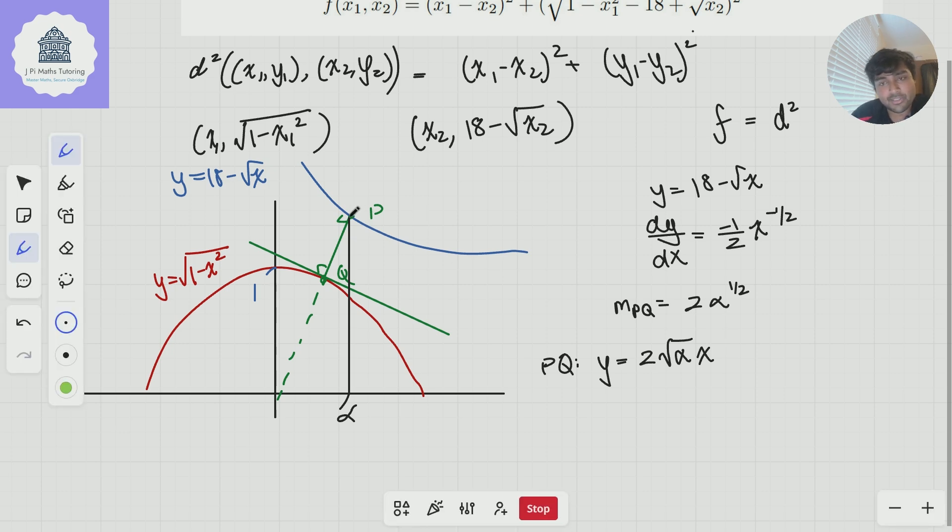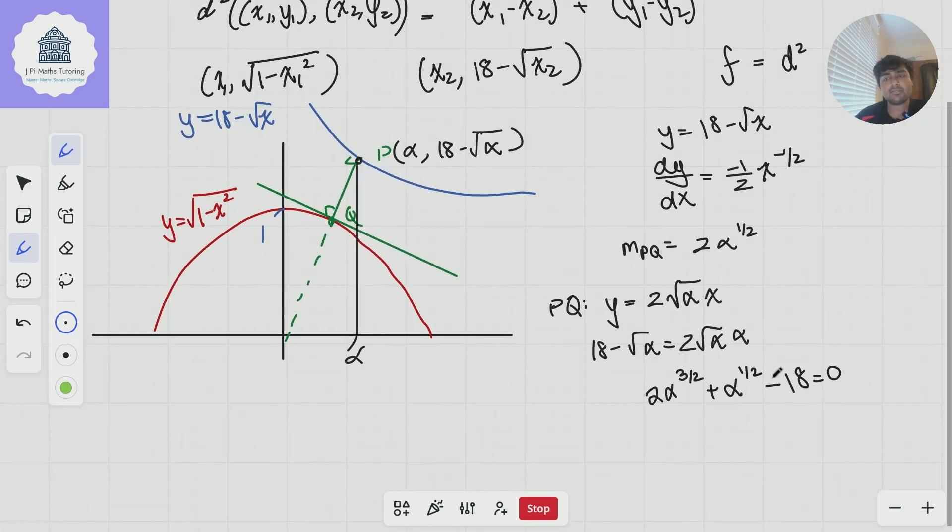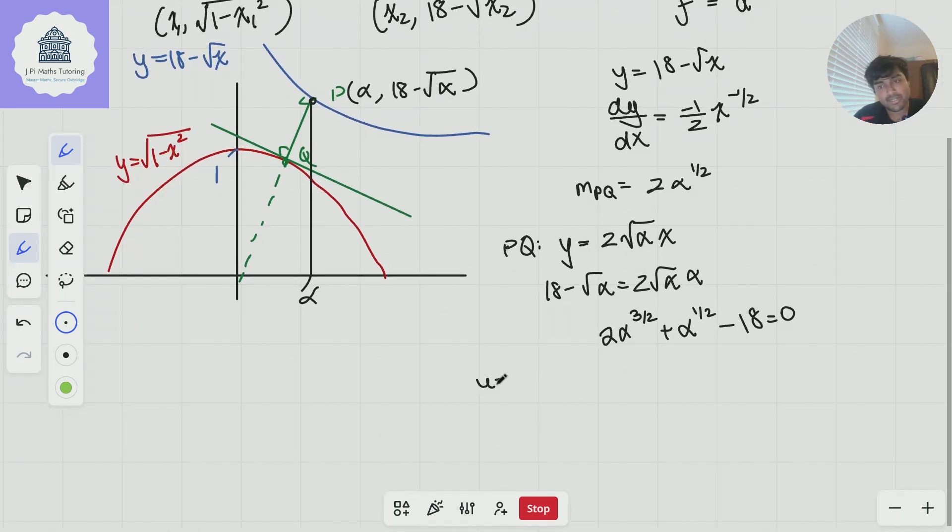How can we use this to help us? Well, we know that this line PQ, as we said, would if we extend it go through the origin. So I know that the line PQ has equation y equals mx, where m is the gradient, but we've just worked out that this is 2√α. It's all good and well, but we don't know what alpha is yet. We can work out what alpha is because we know the coordinates of P in terms of alpha. The x coordinate is alpha and the y coordinate is 18 minus √α.